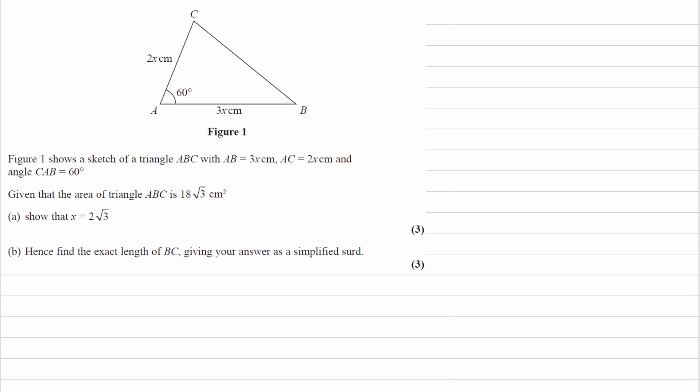We have a triangle ABC, and then we're told the side length, so AB is equal to 3X, and then AC is equal to 2X, and then we're given the angle in between those two sides as well, 60 degrees.